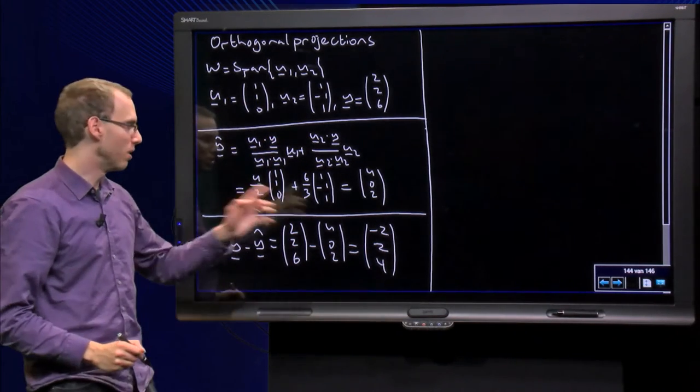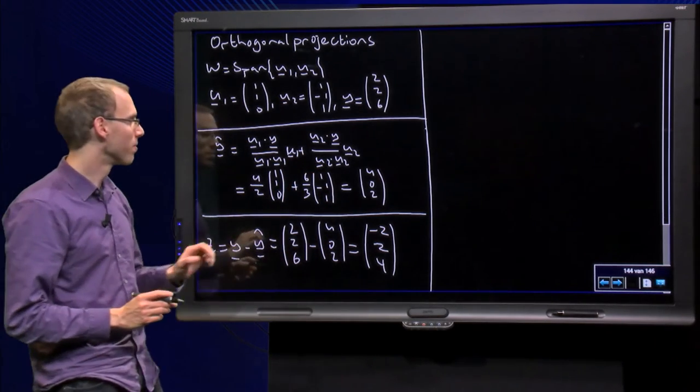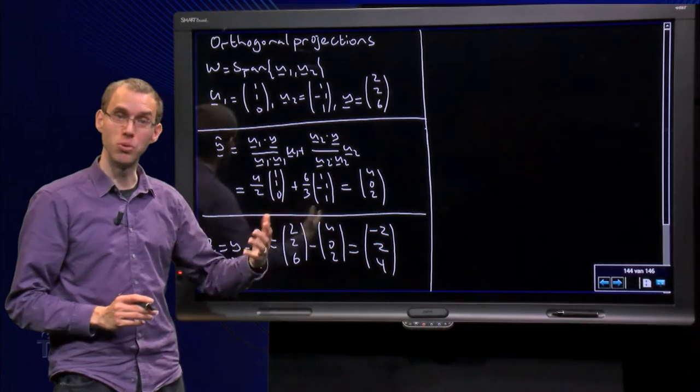And remember, do not change this into [1, -1, 2] or whatever—that's not the same. z equals [-2, 2, 4].